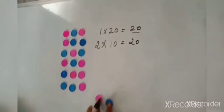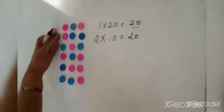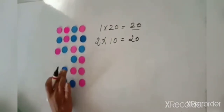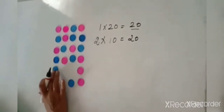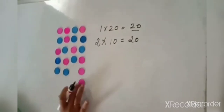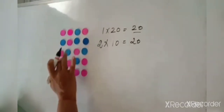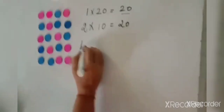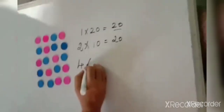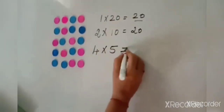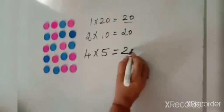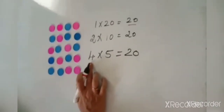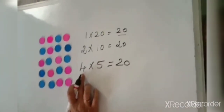Now if I arrange four coins in each row, I will be getting 1, 2, 3, 4, 5 rows. So 4 coins in 5 rows will give 20. That means the number 20 is completely divisible by 4.